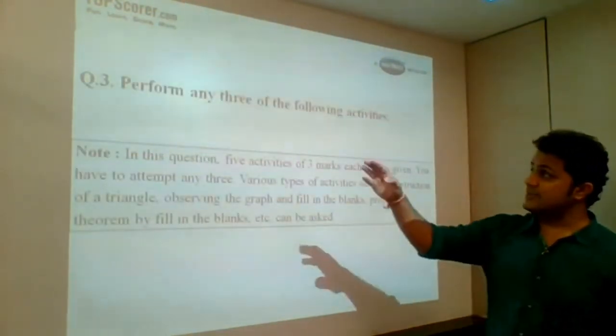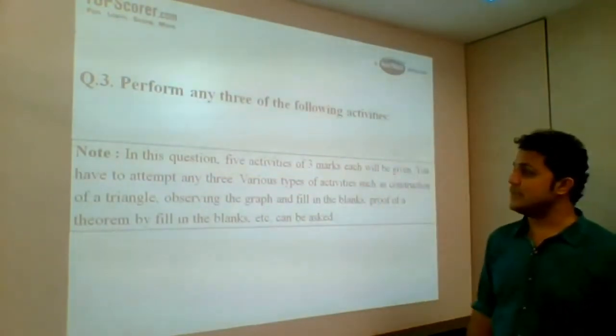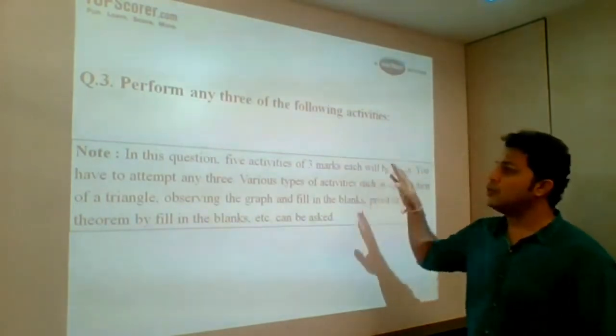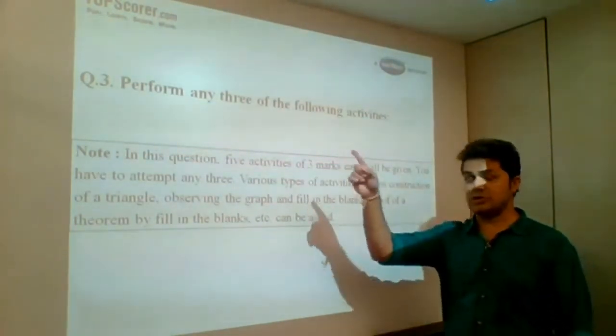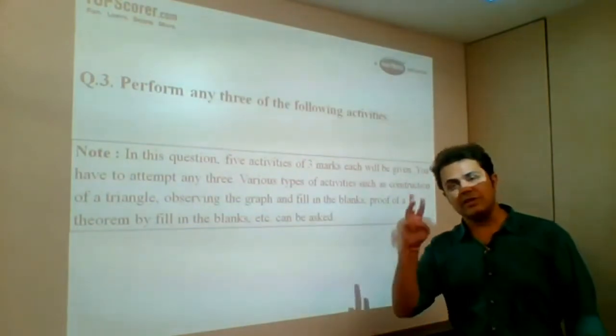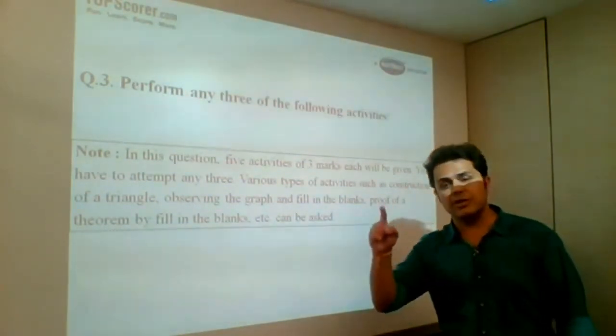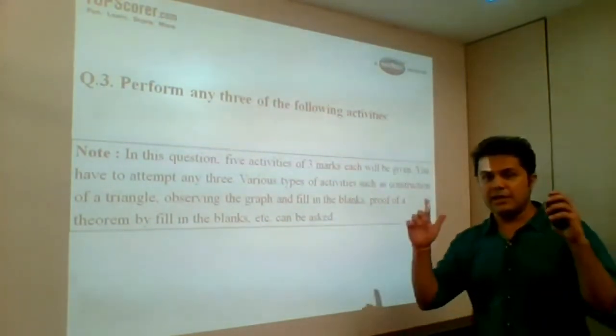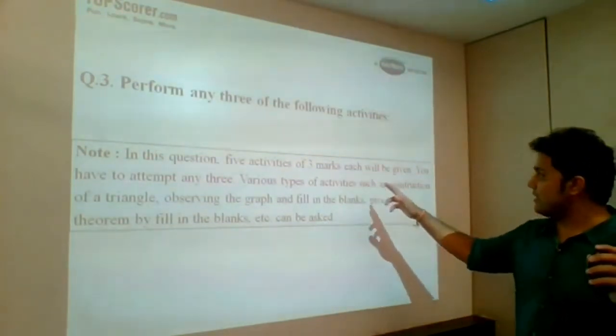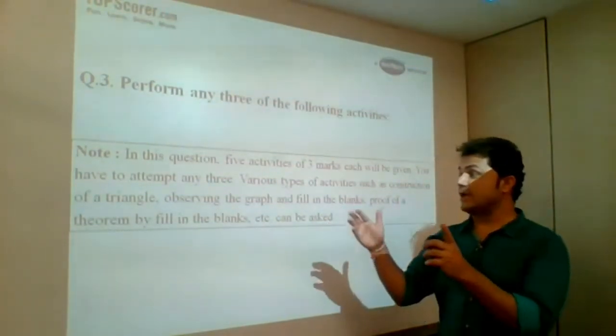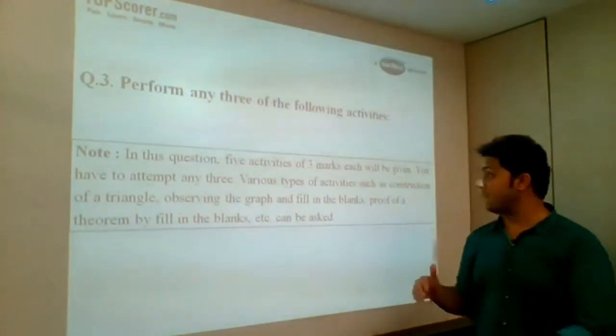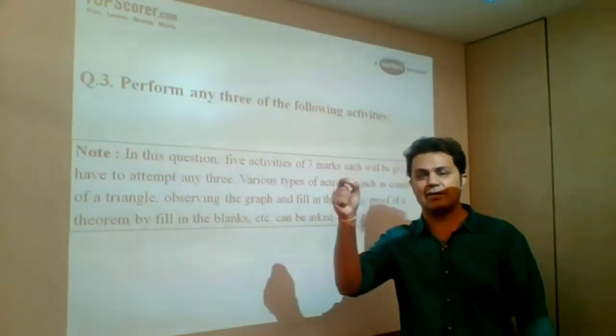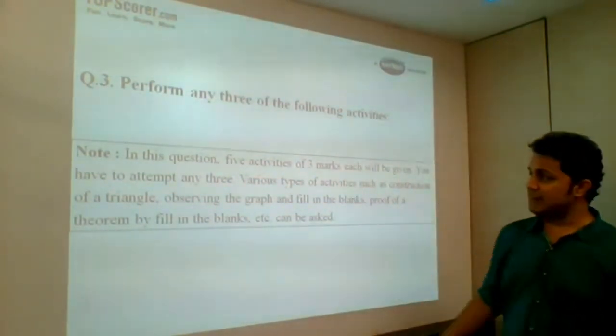Now question number 3 is again perform any 3 of the following activities. In this question, 5 activities of 3 marks each will be given. You have to attend any 3. Since it's question number 3, each question is going to be for 3 marks. So 3 into 3, which is going to be 9 marks. So the total weightage for question number 3 is going to be 9 marks. Various type of activities such as construction of triangles, observing the graph, filling the blanks, and even proof can come in the form of filling the blanks. Only you need to write the correct answer.